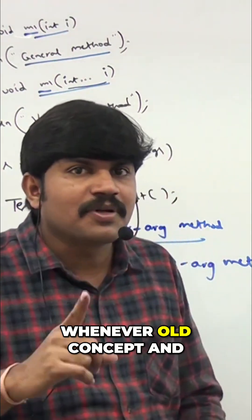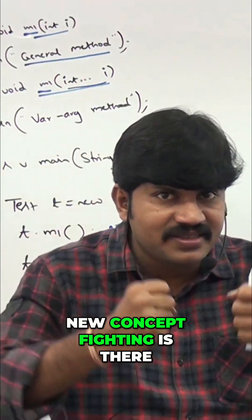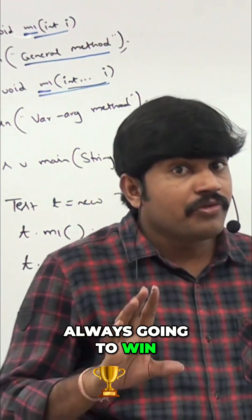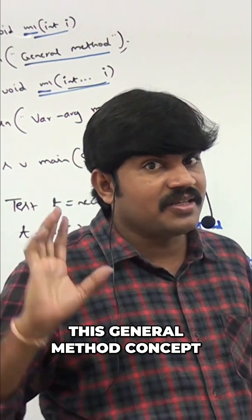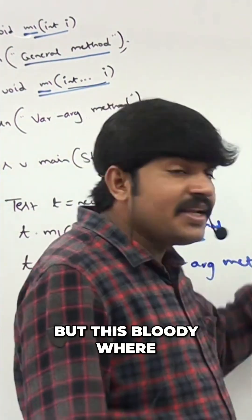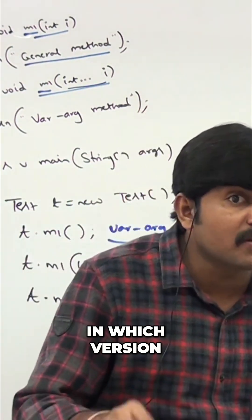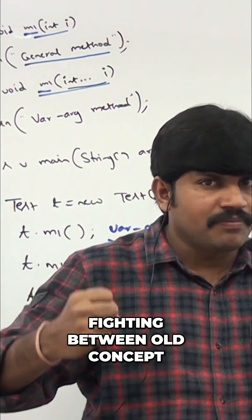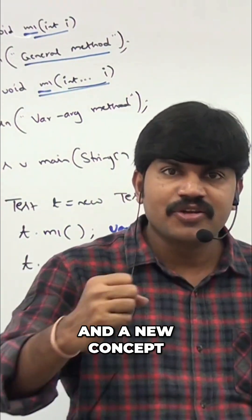Whenever old concept and new concept are fighting, the old concept is always going to win the race in Java. Remember this: the general method concept is from version 1.0 of Java, but the varargs concept came in version 1.5.